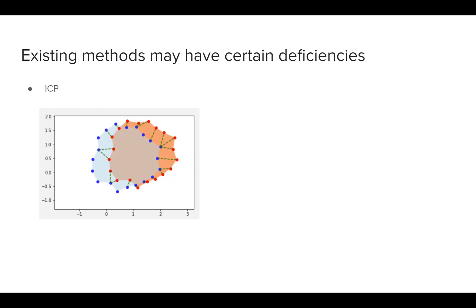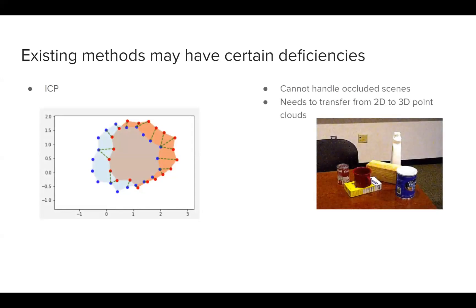However, these methods may have certain deficiencies. For instance, methods like ICP may not be able to handle occluded things, as shown in this picture. And since ICP requires 3D point clouds, and we usually only have 2D images, transferring from 2D to 3D point clouds could potentially raise some problems as well.